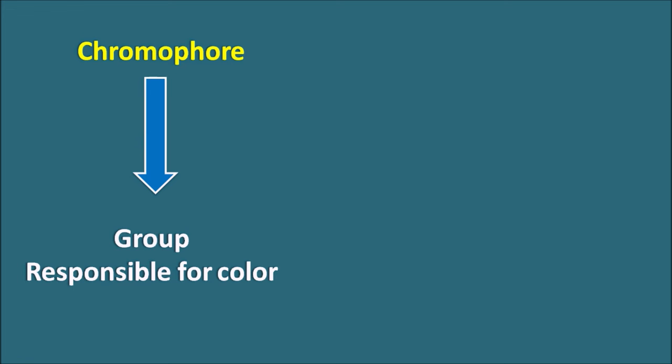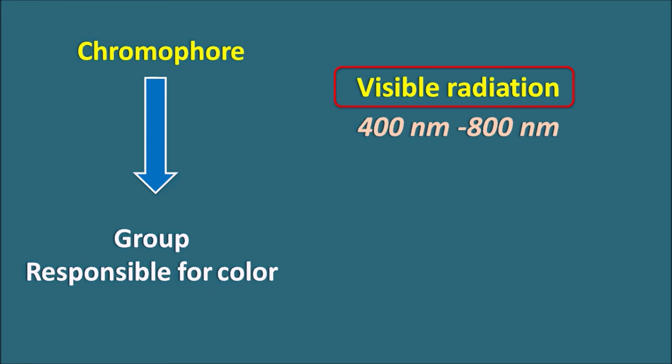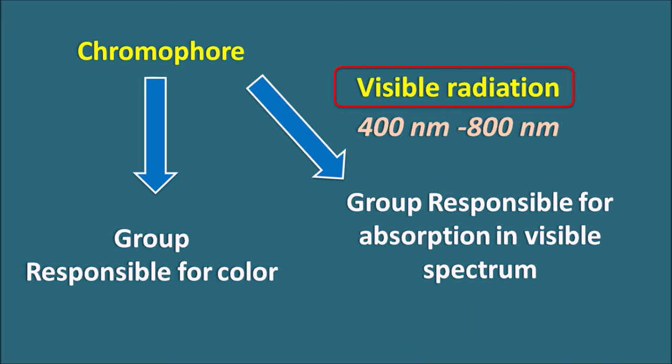A substance will be colored if it is able to absorb radiation within the visible region. The visible region covers from 400 to 800 nm. So we can define chromophore as the group in the molecule which is responsible for absorption within the visible spectrum, that is 400 to 800 nm. In the previous examples, all these compounds are colorless because they are not absorbing within the visible region.